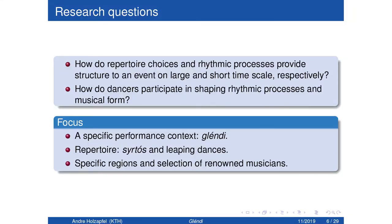And my research questions, well, it's probably a lie to say that I go into the field with research questions. I usually come out of the field with them and then go back and so on. But the questions that I will talk about here is: how do repertoire choices and rhythmic processes provide structure to an event on a large and on a short time scale, respectively? And how do dancers participate in shaping rhythmic processes and musical form? So how does something that looks like a more concert setting actually have a strongly participatory character through the participation of the dancers?